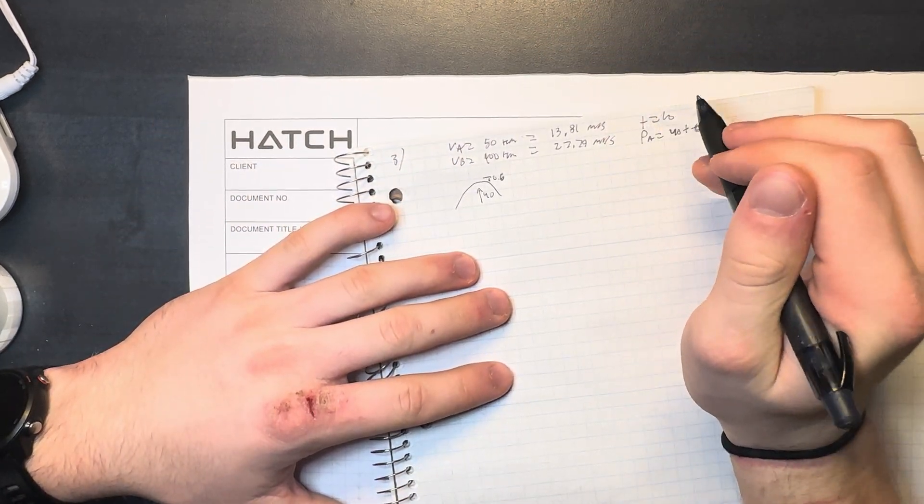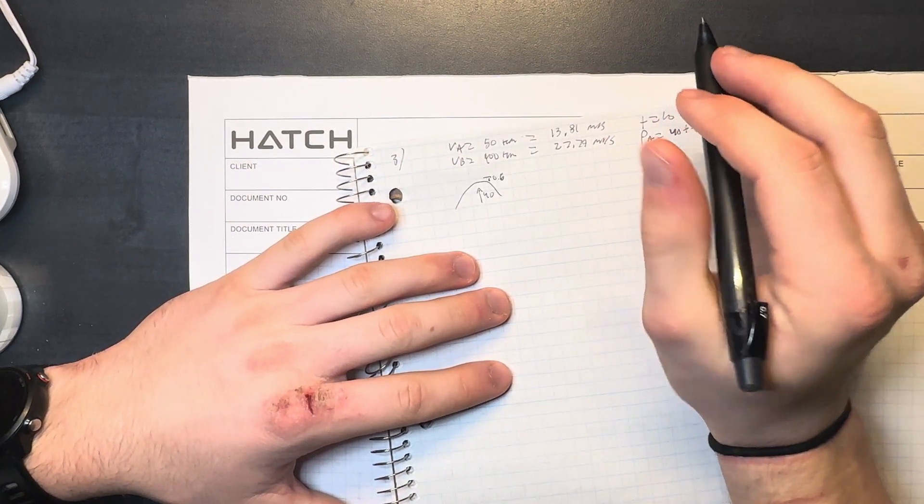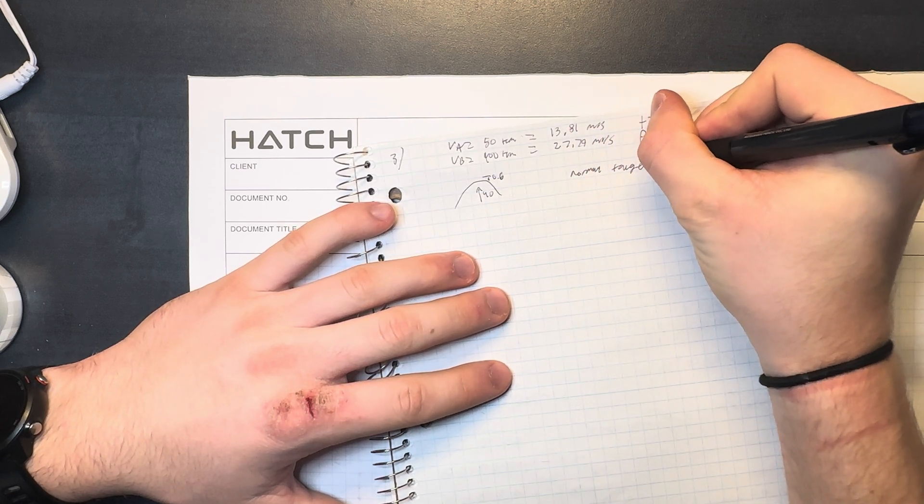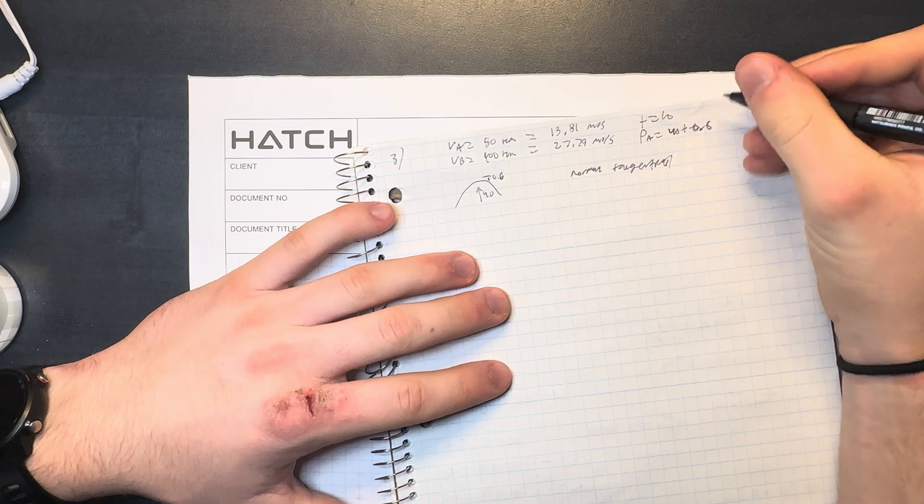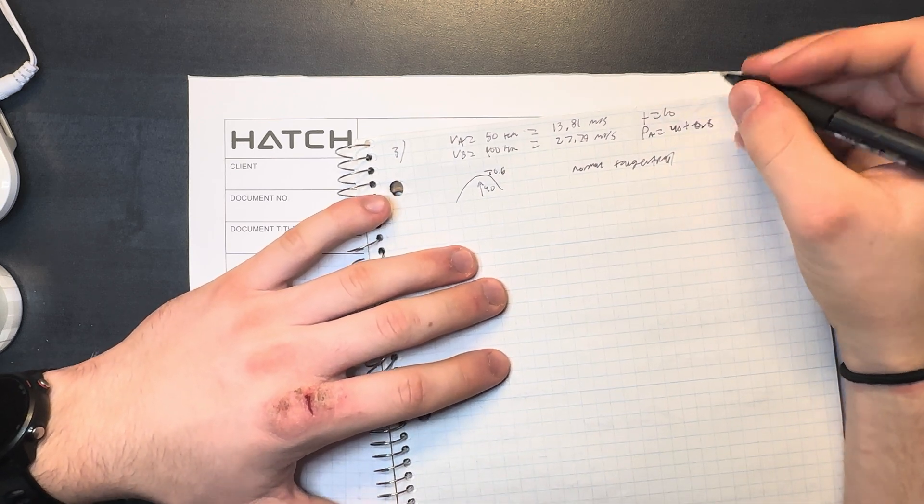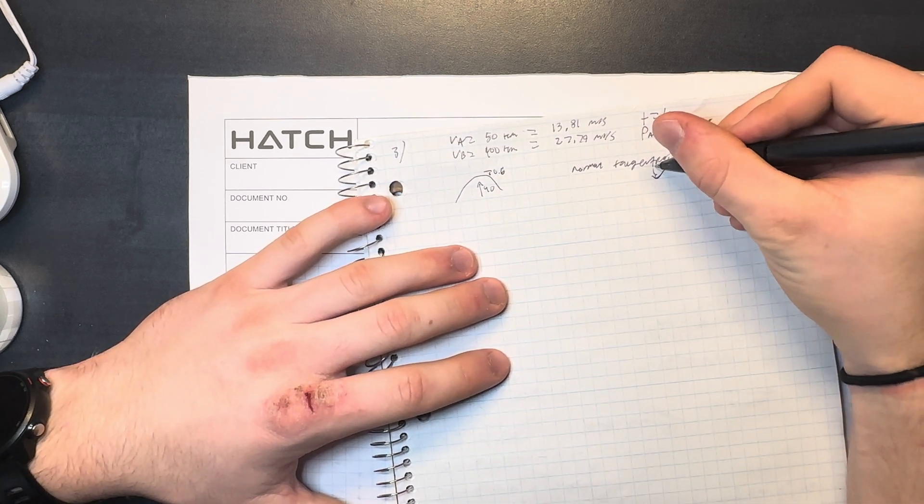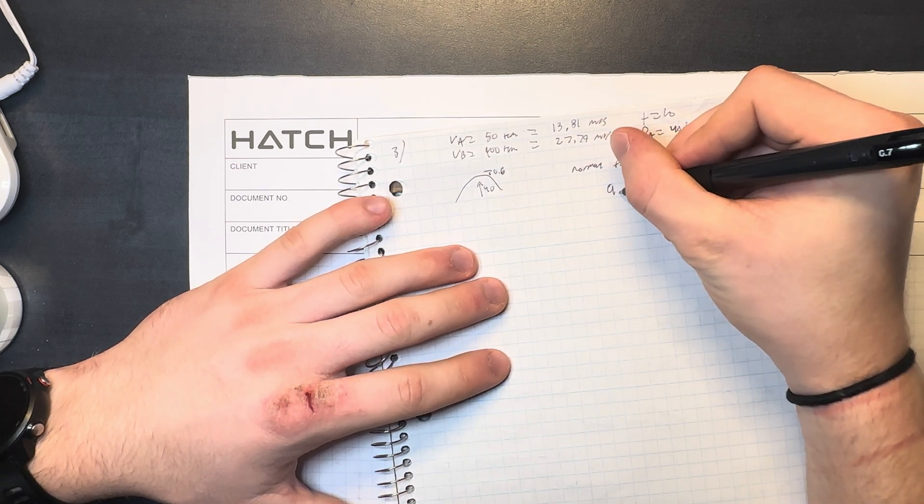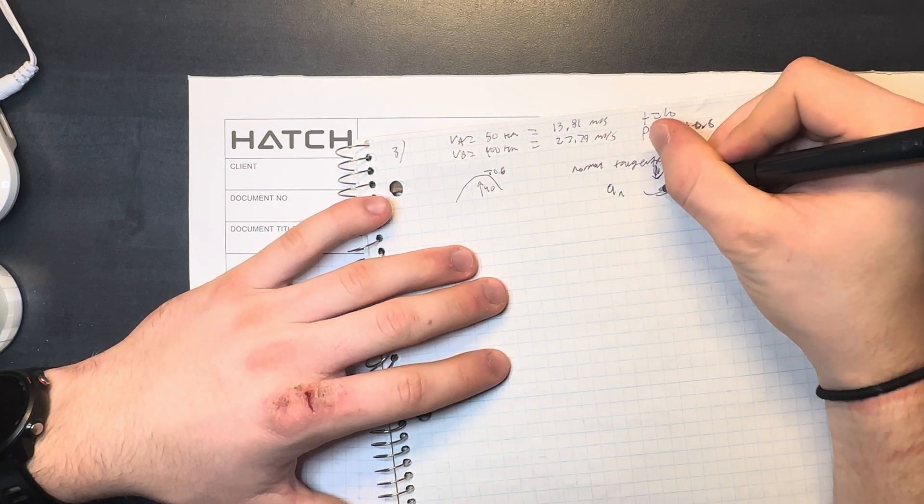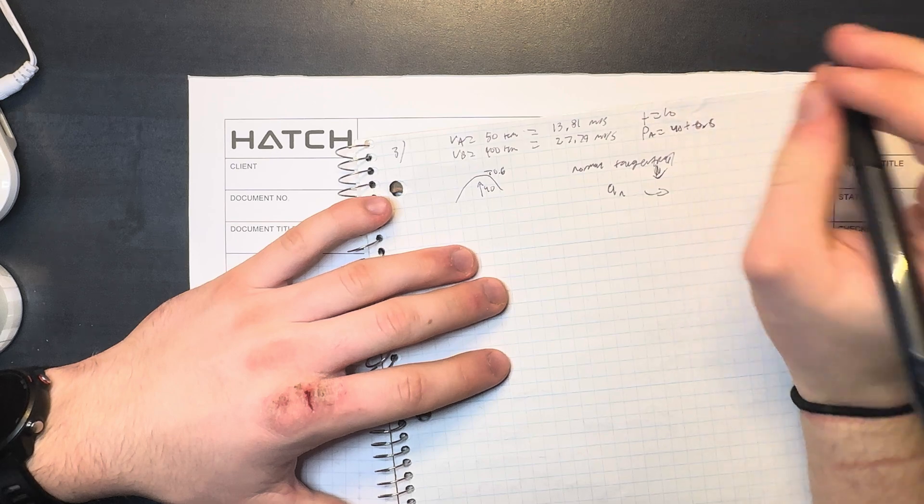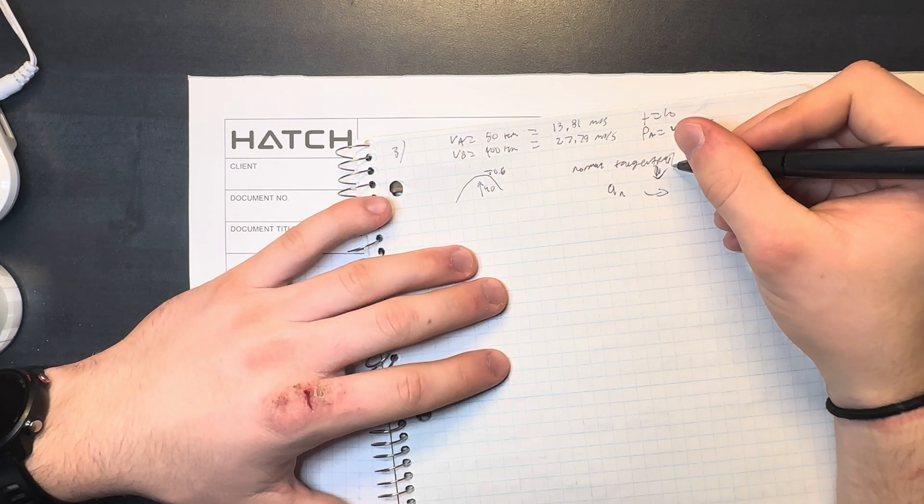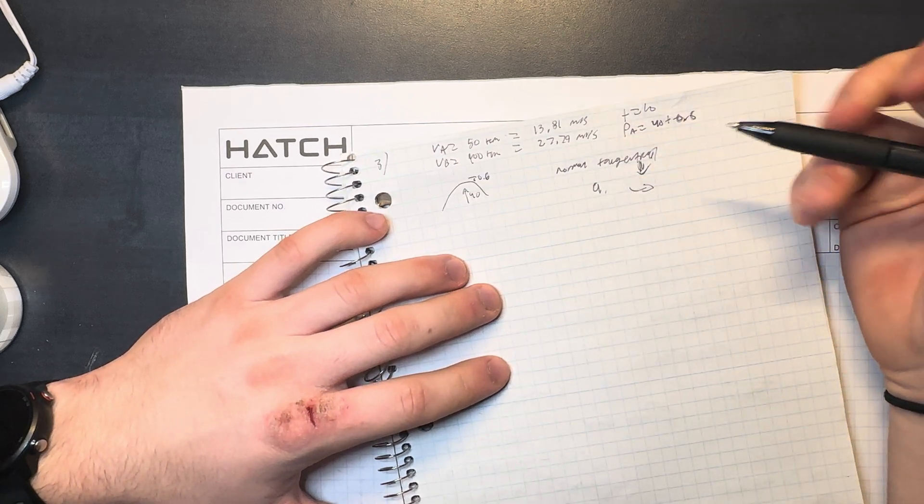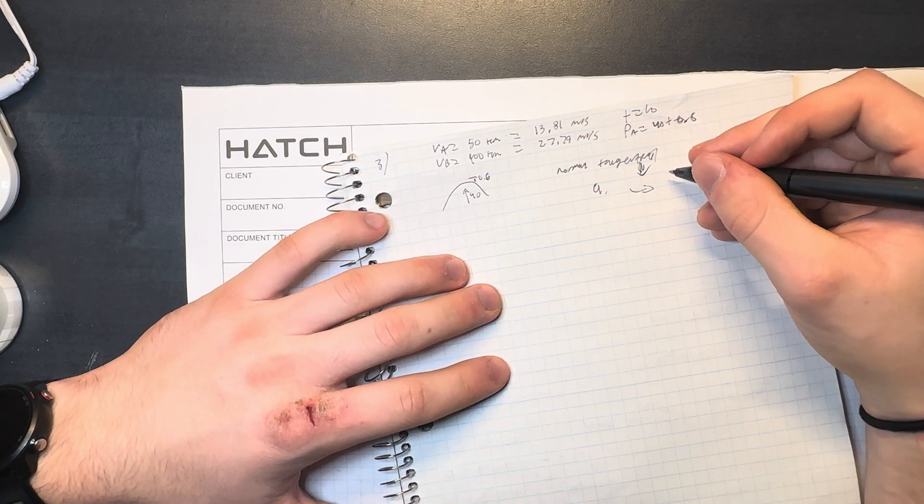So what we are missing is acceleration. We need acceleration because we're going to use normal tangential to solve. We solve for a_n, sorry, we solve for normal acceleration.